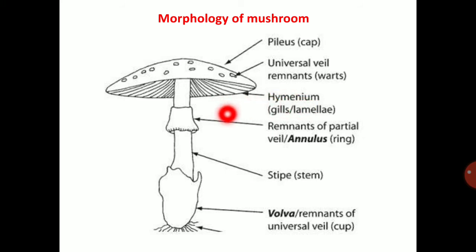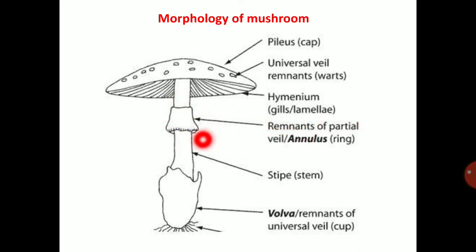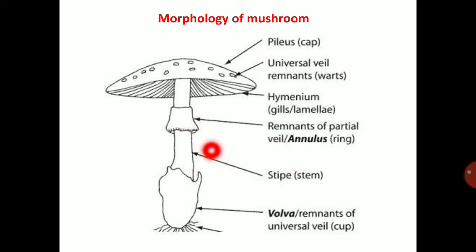The annulus is present in the stipe as a ring-like structure. The stipe means the stem of the mushroom.